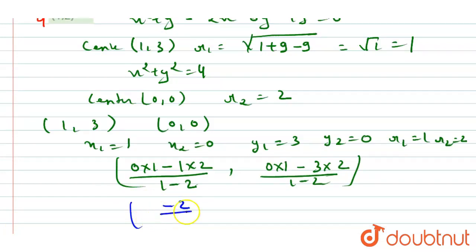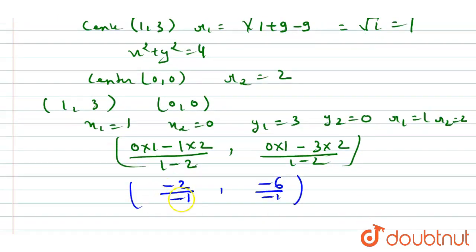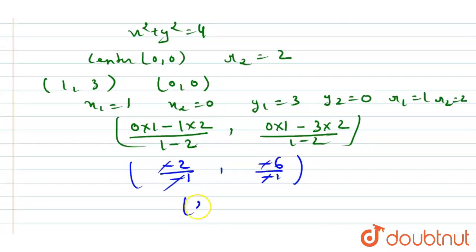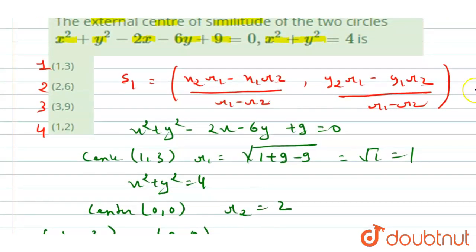-2 upon -1 and -6 upon -1. On further solving, minus and minus will cancel out. We will get 2 and 6. So from the answer options that we have, we can see that the second option is correct. Thank you.